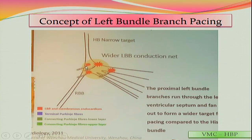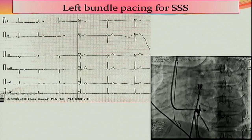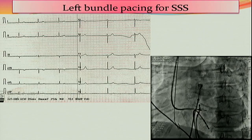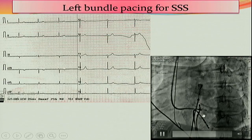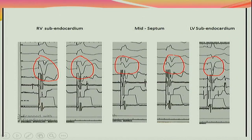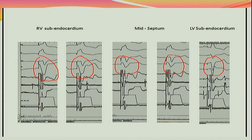Now comes the concept of left bundle pacing. The His bundle is a narrow target, but the left bundle is a wider target — its fibers span the left side of the interventricular septum. All you have to do is go deep into the septum: go via the RV, one centimeter distal to the His bundle region, and screw the lead deeply. You can see the sheath angio here — this is the interventricular septum with the lead deep inside. For QRS morphology during mapping, start from the RV subendocardium: look at lead V1, which shows a W pattern that gradually changes as you advance deeper.